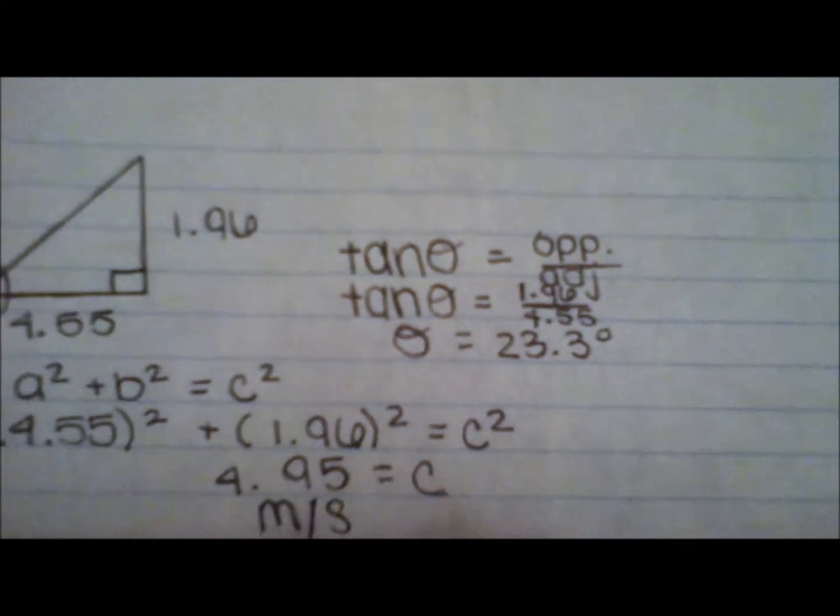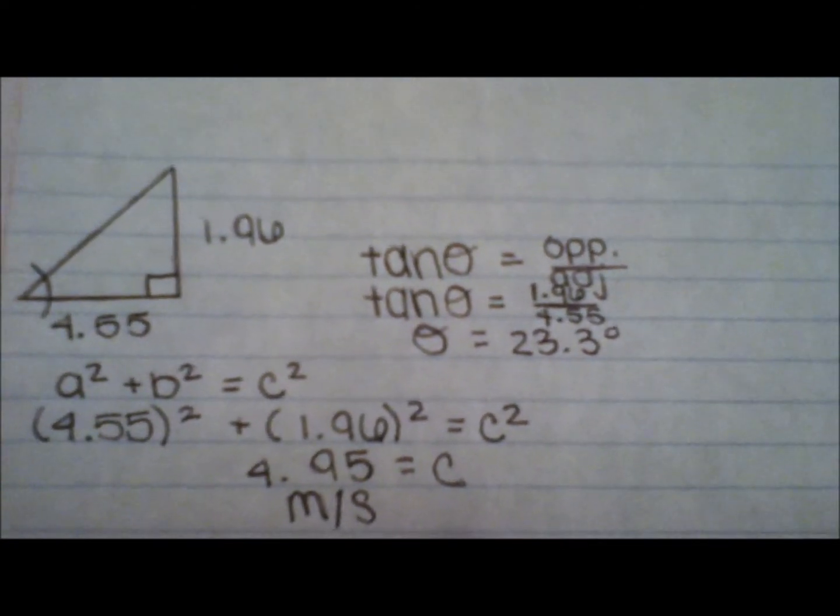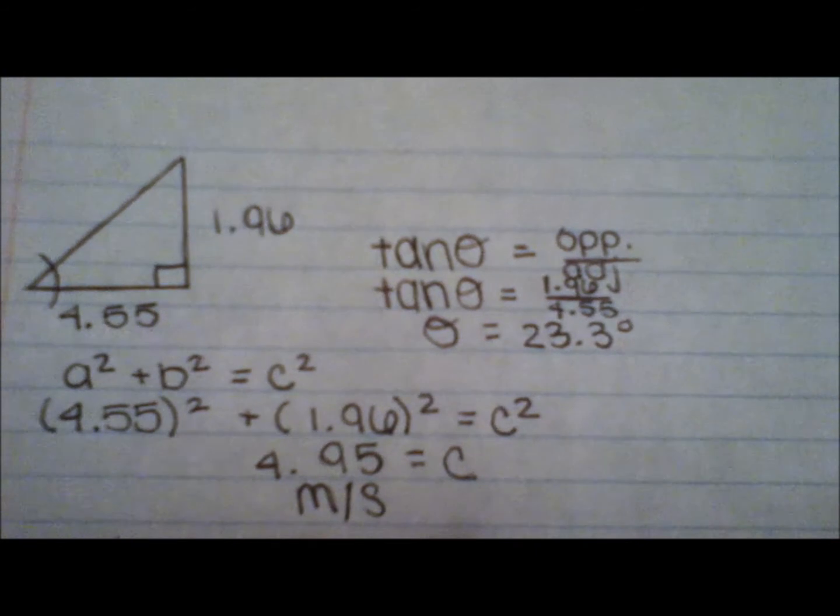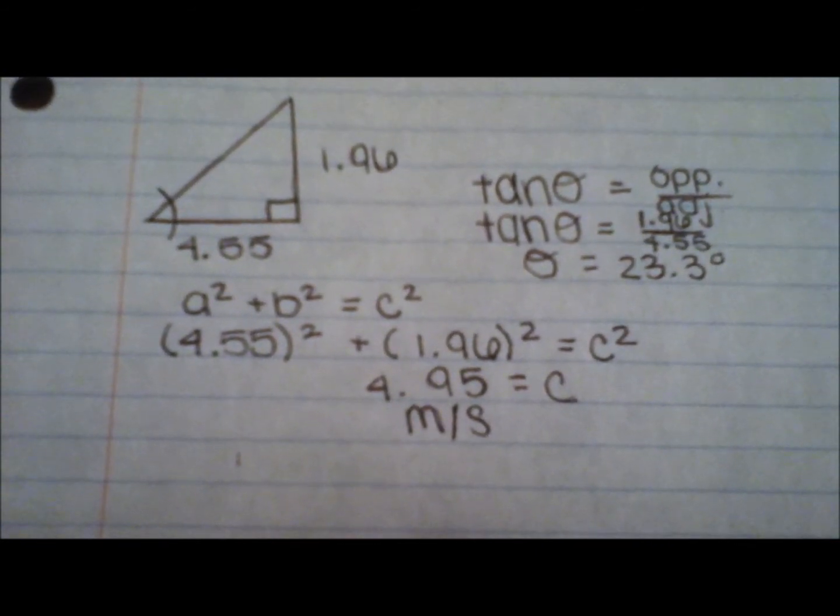Then solve for the unknown angle using a tangent equation, since the sides are opposite and adjacent to the angle are known.